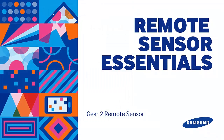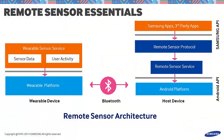Let's learn the architecture and the classes of the Remote Sensor library. Basically, the layers are composed of the application layer, which is an application that uses Remote Sensor; the sensor protocol, which is primarily responsible for accessing the wearable device sensor data; and finally, the Remote Sensor service, which is responsible for Bluetooth connectivity.